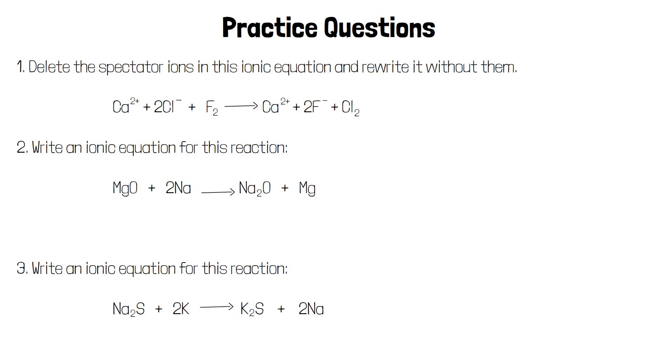In the first equation the spectator ion is the calcium ion Ca2 plus. Its charge doesn't change during the reaction so it isn't being oxidized or reduced. We can delete these spectator ions.